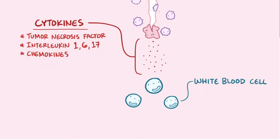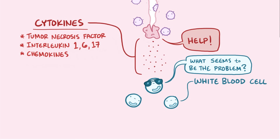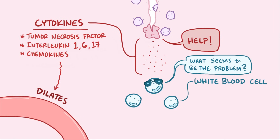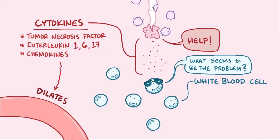It's kind of like yelling for help and being heard by the nearby police. In addition to attracting immune cells, the cytokines also dilate nearby capillaries, which brings more blood to the site, and make the capillaries more leaky so that the white blood cells that do show up can slip out of the blood and get into the tissue more easily.